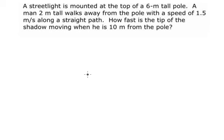So now I will show you how to answer. A streetlight is mounted at the top of a 6-meter tall pole. A man 2-meters tall walks away from the pole with a speed of 1.5 meters per second along a straight path. How fast is the tip of the shadow moving when he is 10 meters from the pole?